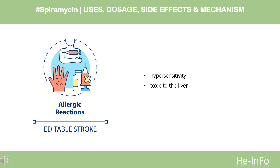Contraindication. Spiromycin is contraindicated in cases of known hypersensitivity to spiromycin or to other antibiotics of the macrolide group, or to any of the excipients. Note: when using spiromycin, because spiromycin can be toxic to the liver, it should be used with caution in people with liver dysfunction.